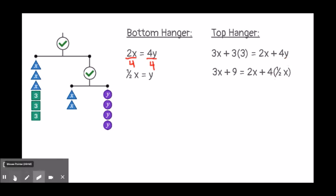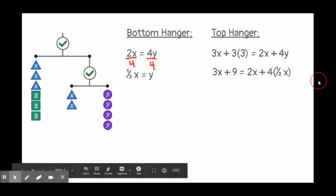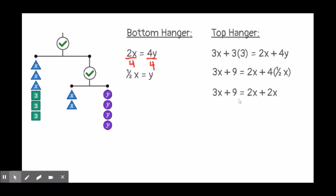When I solve this and simplify it, what I get on the left-hand side is 3x plus 9. On this side, my 2x stays the same. When I multiply four times one-half x, I get 2x.